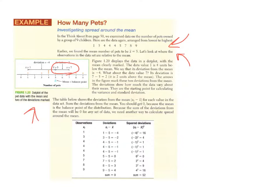Standard deviation is the typical distance the values in a distribution are from the mean. In the table, we take every data point and subtract the mean from it to get the deviations. But if we add all of those deviation values up, they equal zero — because we are looking at the spread around the mean.